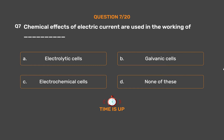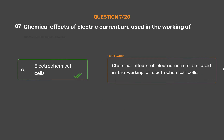The correct answer is Option C: Electrochemical cells. Chemical effects of electric current are used in the working of electrochemical cells.